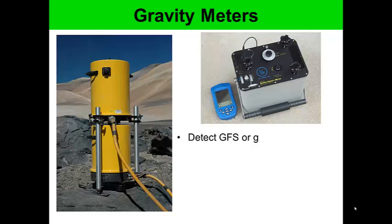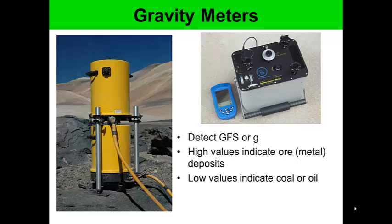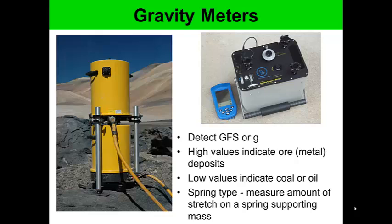Gravity meters are used to detect gravity. High values indicate ore or metal deposits, while low values indicate coal or oil deposits. Spring-type gravity meters measure the amount of stretch on a spring supporting a mass.